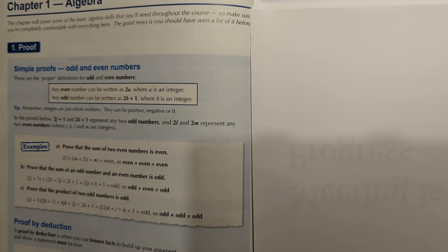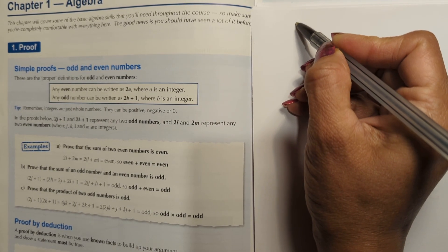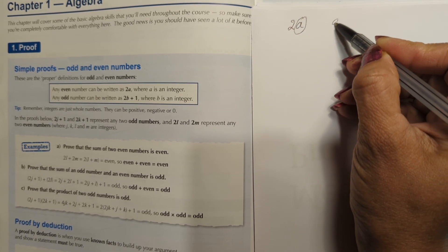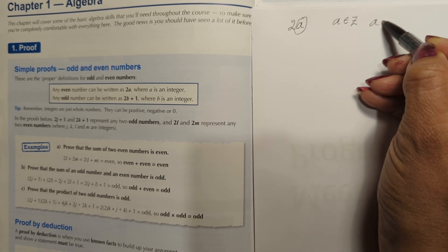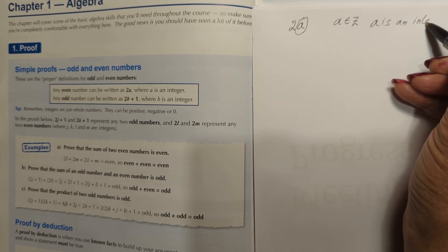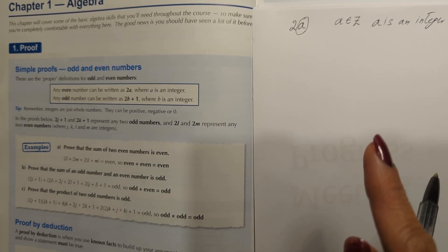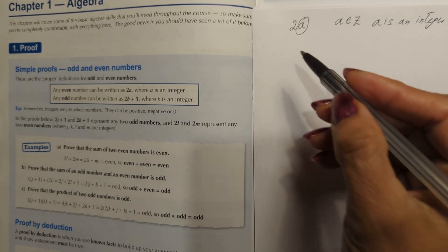The first topic is about odd and even numbers. There are proper definitions for odd and even numbers. In mathematics, the proper definition of an even number is that it can be written as 2a, where a is an integer — a belongs to Z. It can be positive, negative, or zero. Any number multiplied by 2 will be an even number.